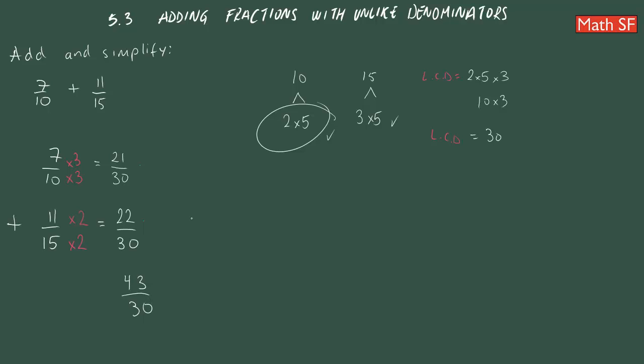Now, the answer must be simplified. 43 is a prime number. How do I know that? Well, if you use your divisibility rules, this is not divisible by 3. Is this divisible by 2? No, neither by 5.